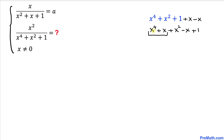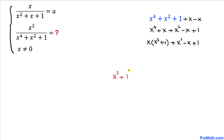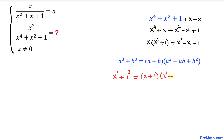We can see that x is common between these two terms, so I can factor that out and write x(x³ + 1) + (x² - x + 1). Now let's focus on x³ + 1 inside the parentheses. We can write 1 as 1³, so we have the sum of two cubes. We'll use the formula a³ + b³ = (a + b)(a² - ab + b²) to factor this as (x + 1)(x² - x + 1).